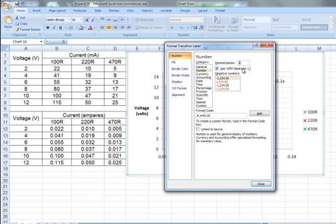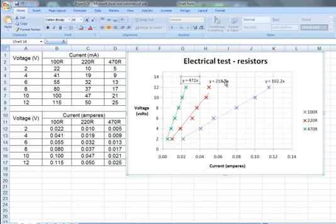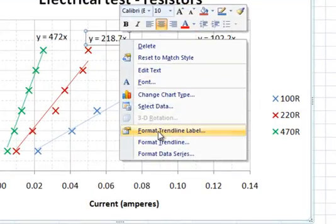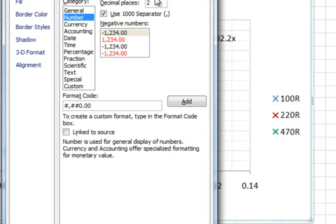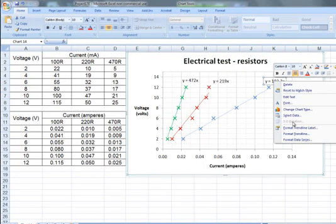So I'm going to round each of these. I'm going to format the trendline label, and inside format trendline label, I'm going to choose zero decimal places for each of these values for the gradient.